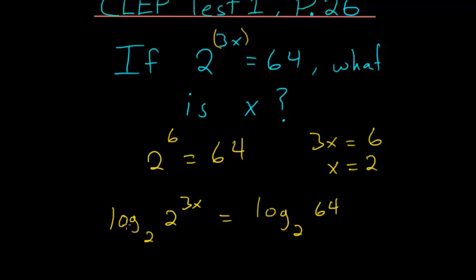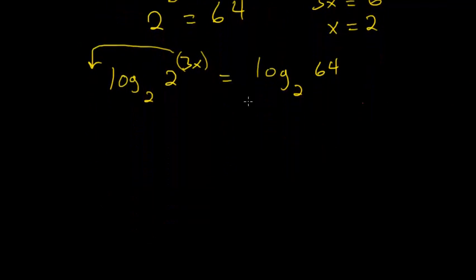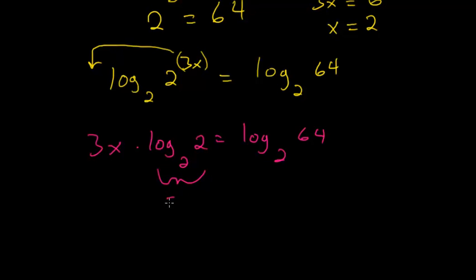And from here, we can take this exponent, this 3x here, and move it in front based on the rules of logarithms. So now we have that 3x times log base 2 of 2 is equal to log base 2 of 64. And log base 2 of 2, in other words meaning 2 to what power gives you 2, this is just equal to 1.